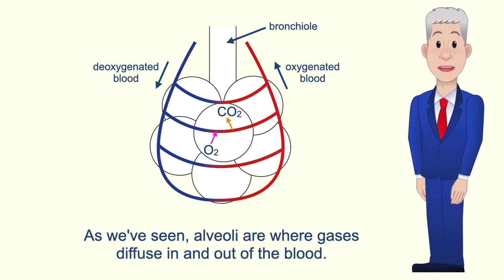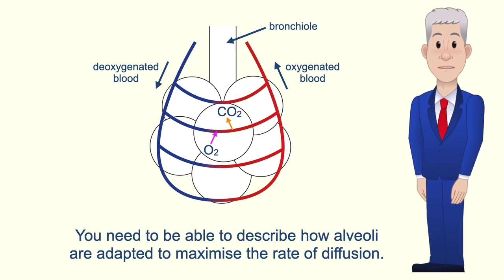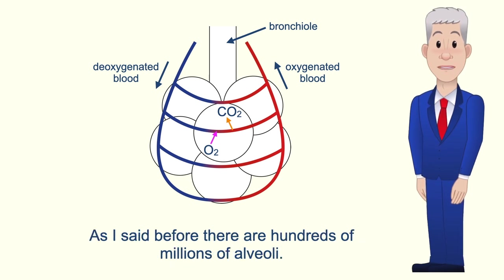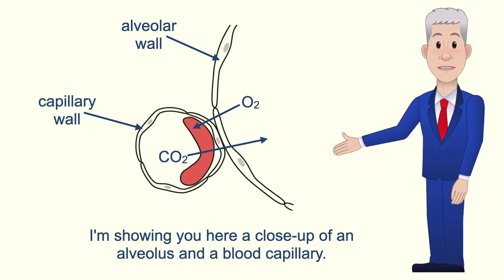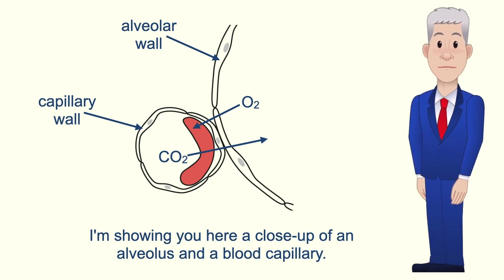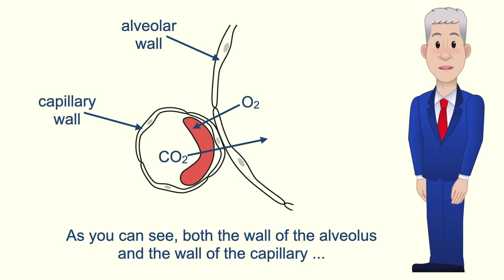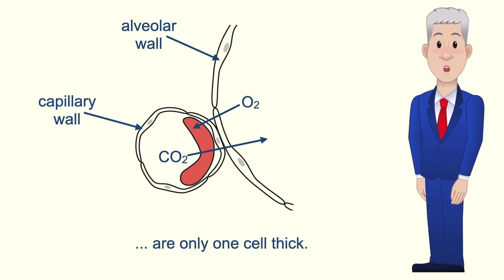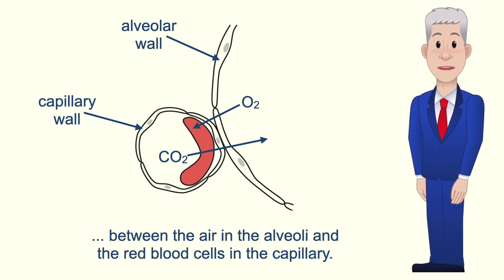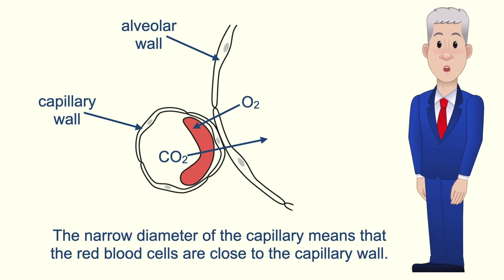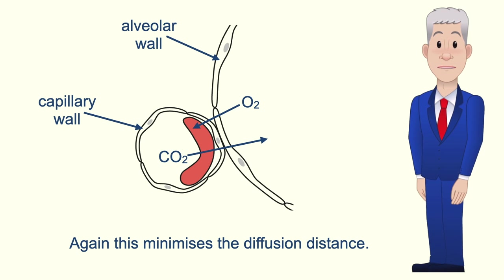Alveoli are where gases diffuse in and out of the blood, and you need to be able to describe how they are adapted to maximize the rate of diffusion. There are hundreds of millions of alveoli, providing a massive surface area for the diffusion of gases. Both the wall of the alveolus and the wall of the capillary are only one cell thick, meaning there is a very short diffusion distance between the air in the alveoli and the red blood cells. The narrow diameter of the capillary also means that the red blood cells are close to the capillary wall, further minimizing the diffusion distance.